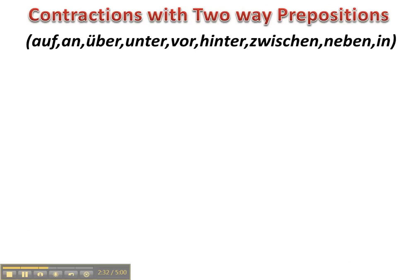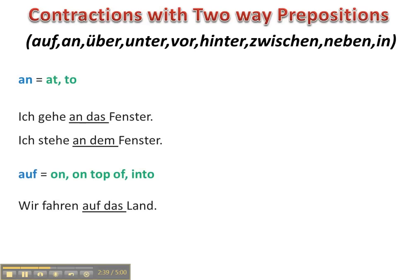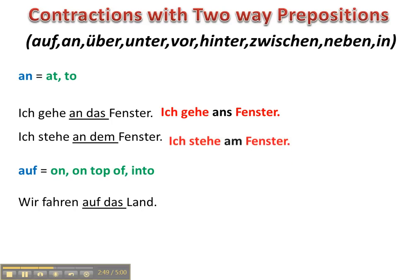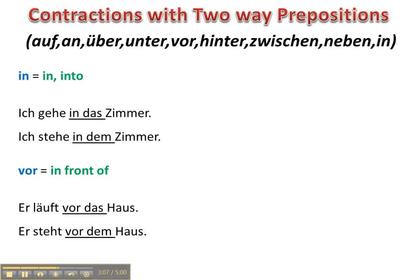The two-way prepositions are by far the most numerous in terms of being able to be contracted with definite articles. An: Ich gehe an das Fenster → Ich gehe ans Fenster. I'm going to the window. Ich stehe an dem Fenster → Ich stehe am Fenster. I'm standing at the window — that's location. Auf: Wir fahren auf das Land → Wir fahren aufs Land. We are driving into the countryside. In: Ich gehe in das Zimmer — that's an action, so accusative. Ich gehe ins Zimmer. Ich stehe im Zimmer. I'm standing in the room.